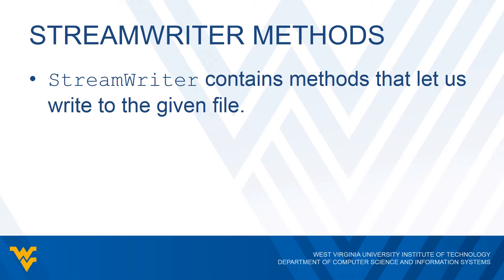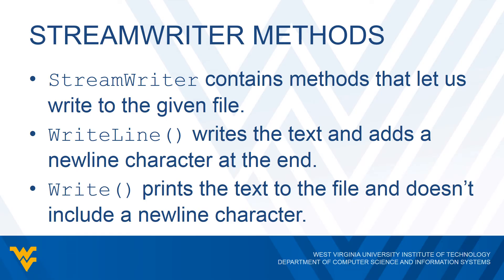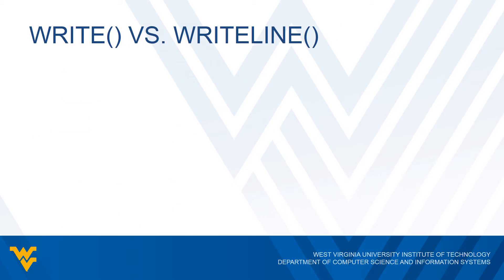The StreamWriter class provides several methods for writing to a file. We're going to mention two very common ones. The first is 'WriteLine', which writes the text to the file and then adds a new line character at the end, so the next thing printed will be on a new line. We also have the 'Write' method, which prints text to the file but does not include a new line character. The only difference between WriteLine and Write is that one includes the new line character and the other does not.